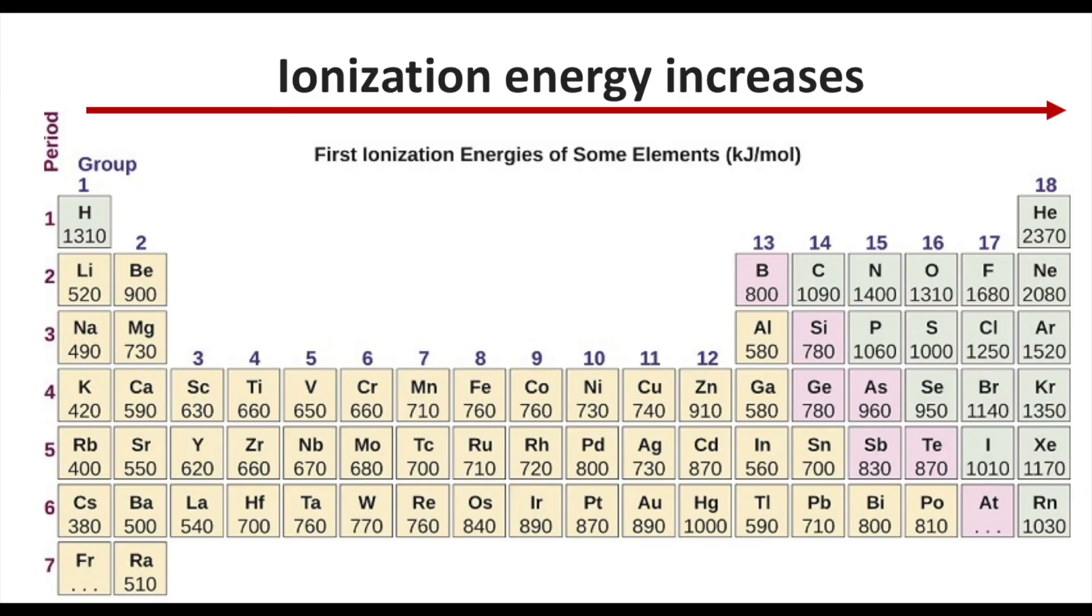Let's look at this table that displays the first ionization energies for the main group and transition elements. What I want us to do is focus on the main group elements and see if we are able to notice a trend in these energies. As we move from left to right across the periodic table, we see an increase in ionization energies.